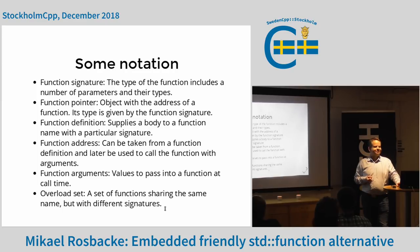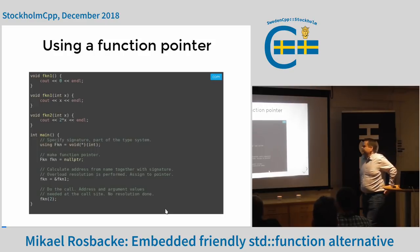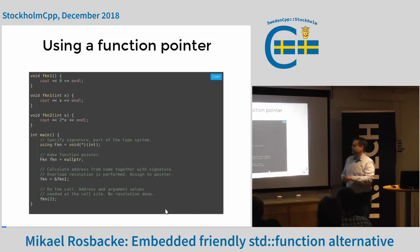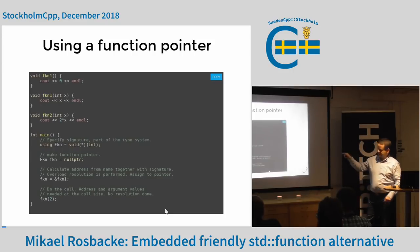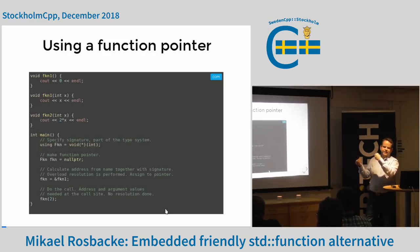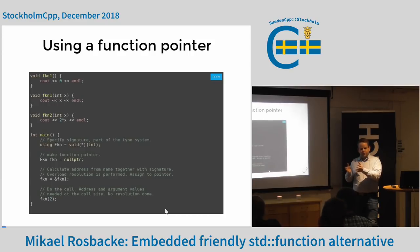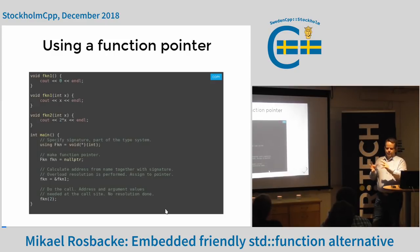So if we instead want to do a function pointer, I'll split up this main into four different parts. First, I want to get rid of the C notation so I use 'using' to talk about types in a reasonable way. You can set it to null, but that's not a good idea to call - that's undefined behavior. Then you take the address, and at this point you're doing overload resolution: you take the name, look at the signature, find the actual function definition, and assign it to the function pointer.